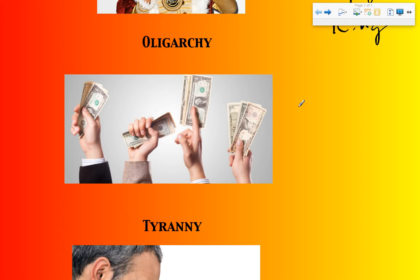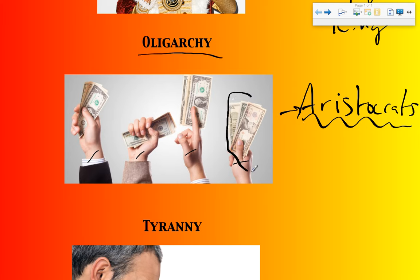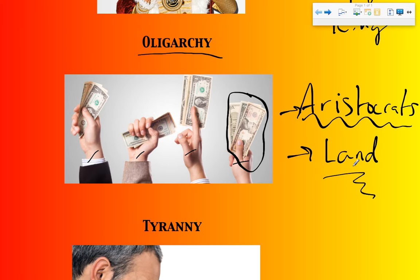Another form of government used throughout ancient Greece is called oligarchy, sometimes called an aristocracy. An oligarchy is a little bit different because instead of having a king, it has multiple rulers. Those rulers are called aristocrats or oligarchs. As you can tell by the picture, these people are all wealthy — really what makes them wealthy is that they are landowners. That's a big deal in ancient Greece because there isn't that much land to go around, so if you own it, you gain power and control. These aristocrats would share power amongst themselves.